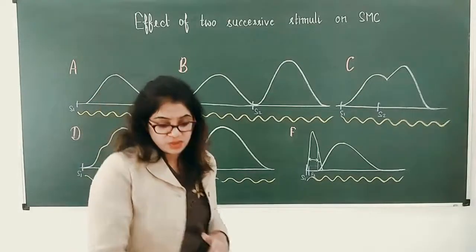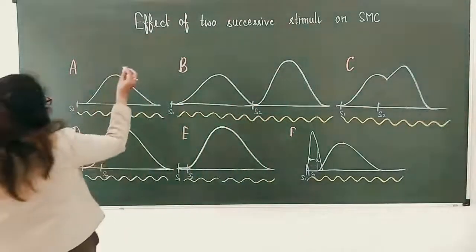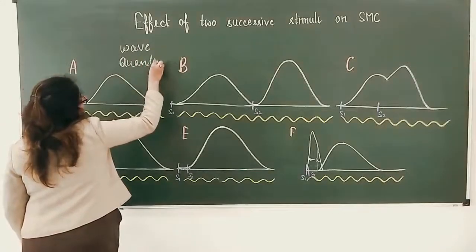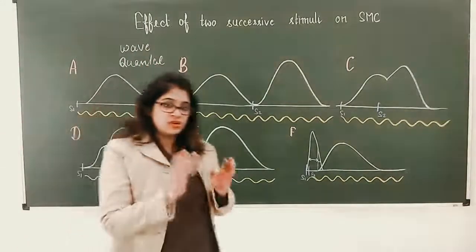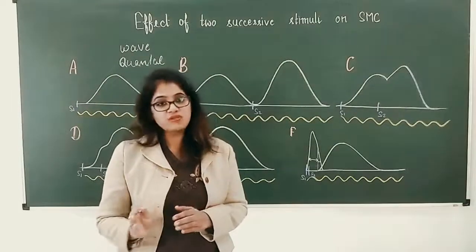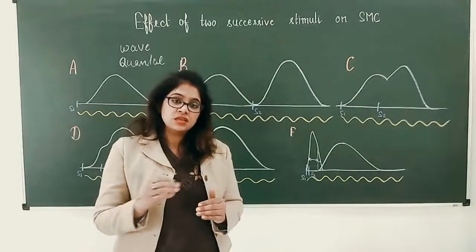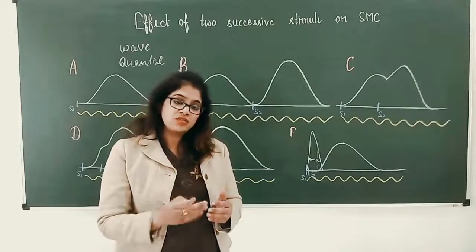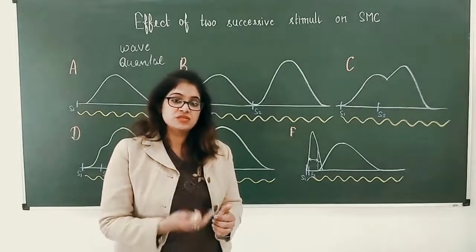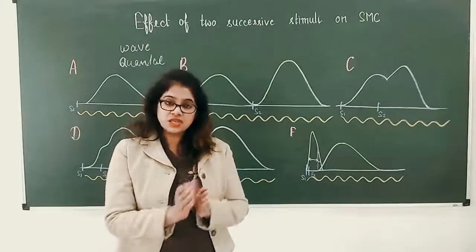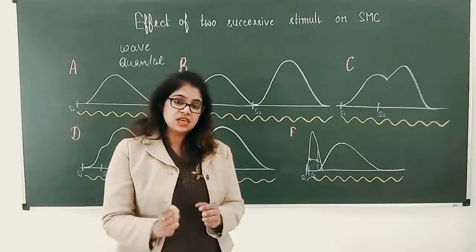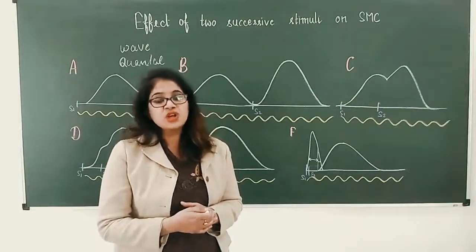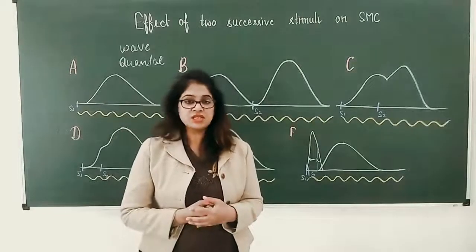Your examiner may also ask: what is wave summation and what is quantal summation? In wave summation, the contraction wave passes through the same number of muscle fibers, but there is increased force of contraction due to the summation effect. In quantal summation, more muscle fibers are involved in the second stimulus. So in wave summation the number of muscle fibers is the same, while in quantal summation the second stimulus involves more muscle fibers. This is the difference between quantal and wave summation. This is all about this practical and the likely questions related to it.